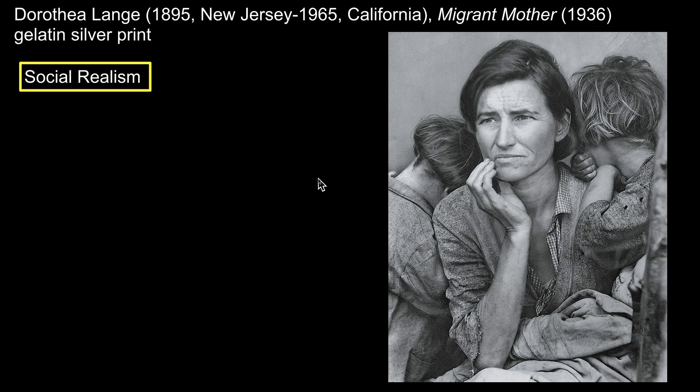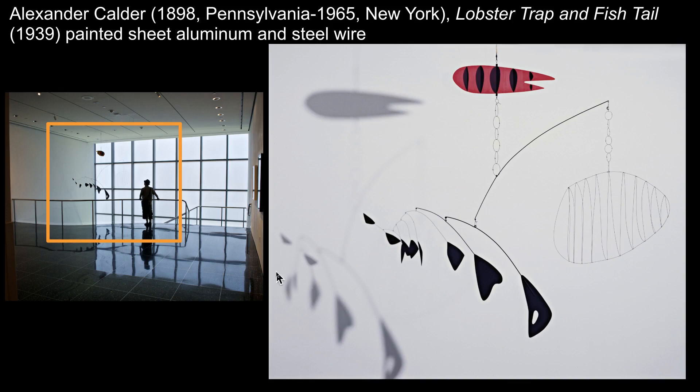Lange's photograph is part of another ism at this time: social realism, which was a pivot by artists to show everyday life and societal issues like poverty and racism in both urban and rural contexts. WPA and other government art patronage during the Great Depression period contributed to and supported social realism. But there were other more modernist veins as well in the 1930s. An influx of artists immigrating to the U.S. from Europe sparked further interest in modernism and developments across the pond.